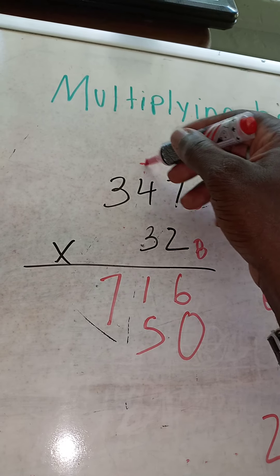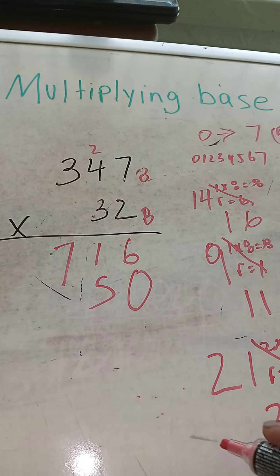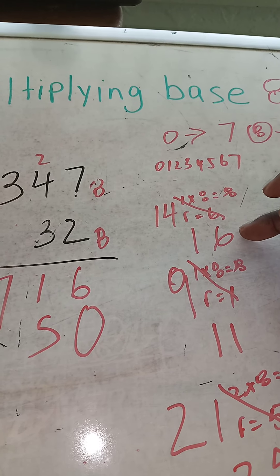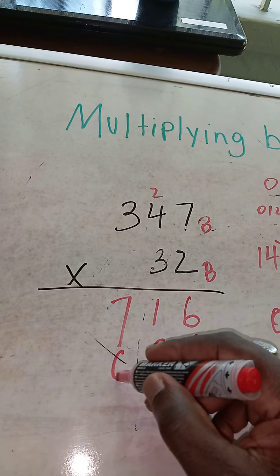5, and we carry the 2. 3 times 4 is 12, 13. How do we write 14? Remember we did 14 earlier, we'll get 1 and 6. So we put down the 6 and we carry the 1.